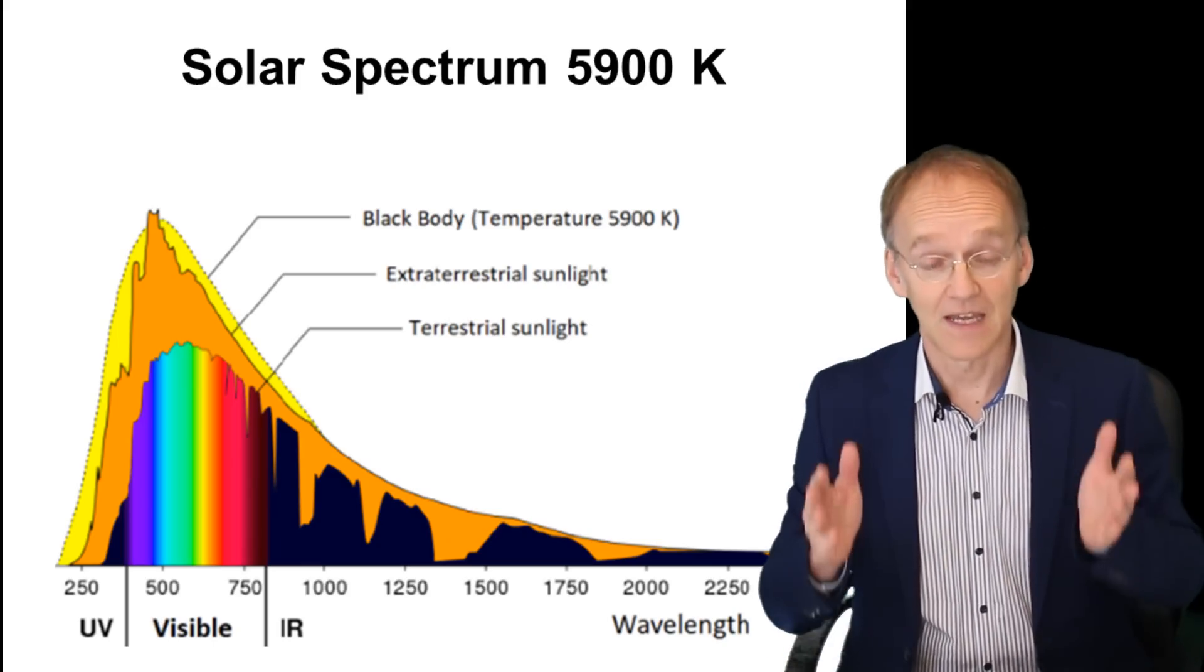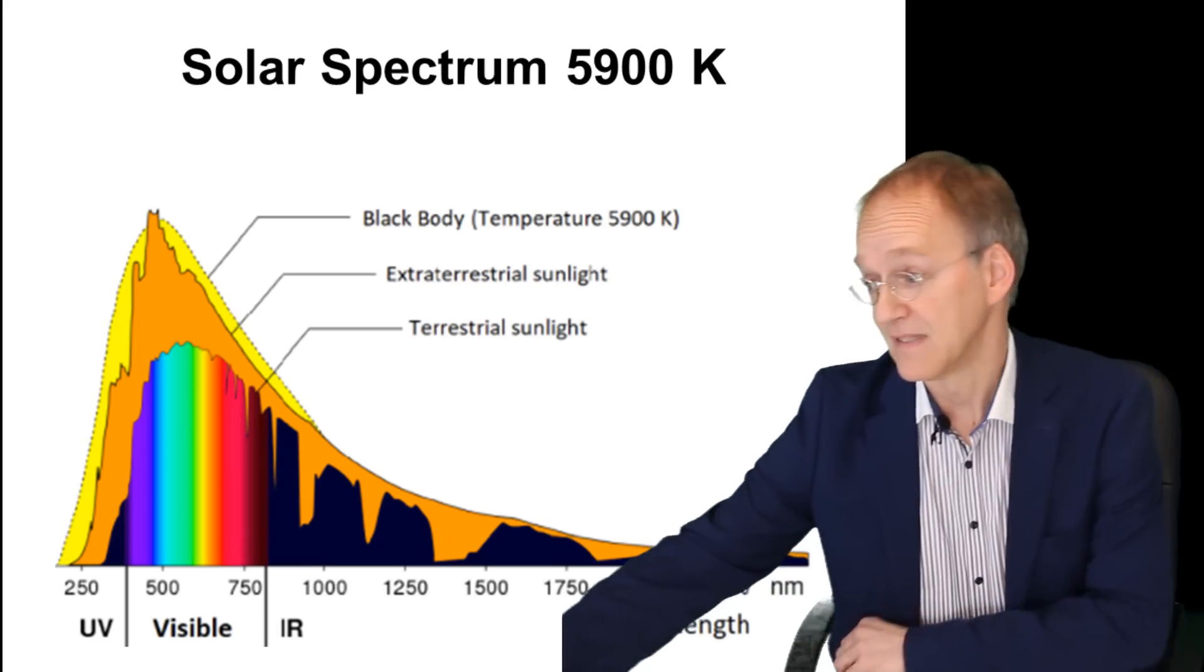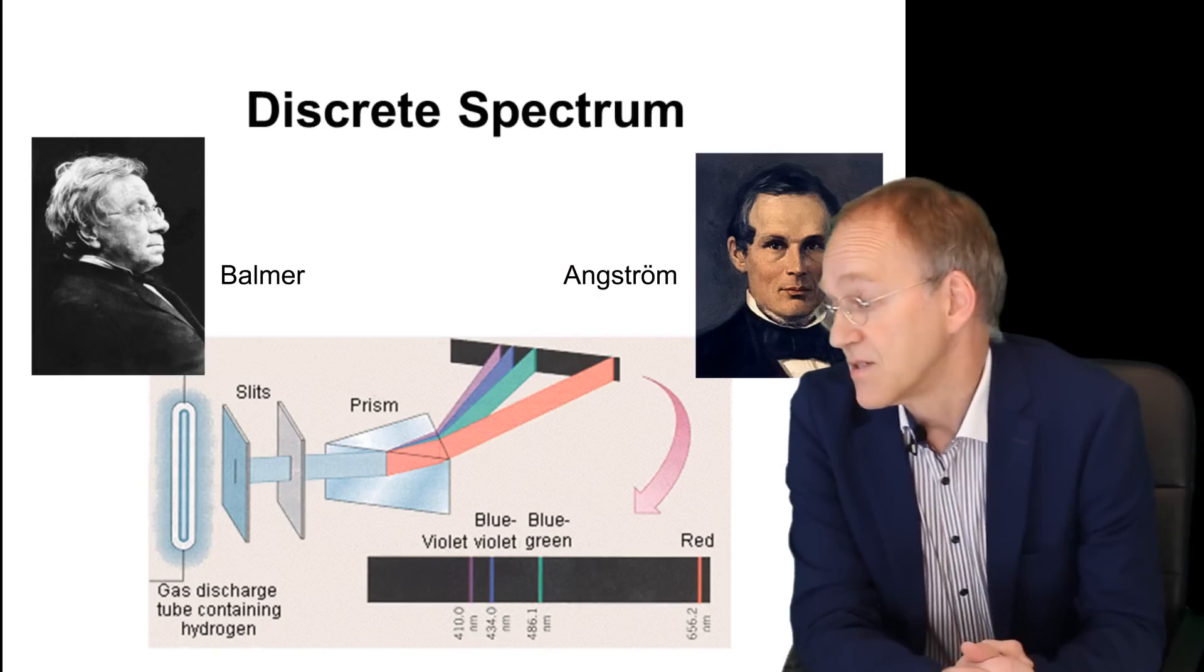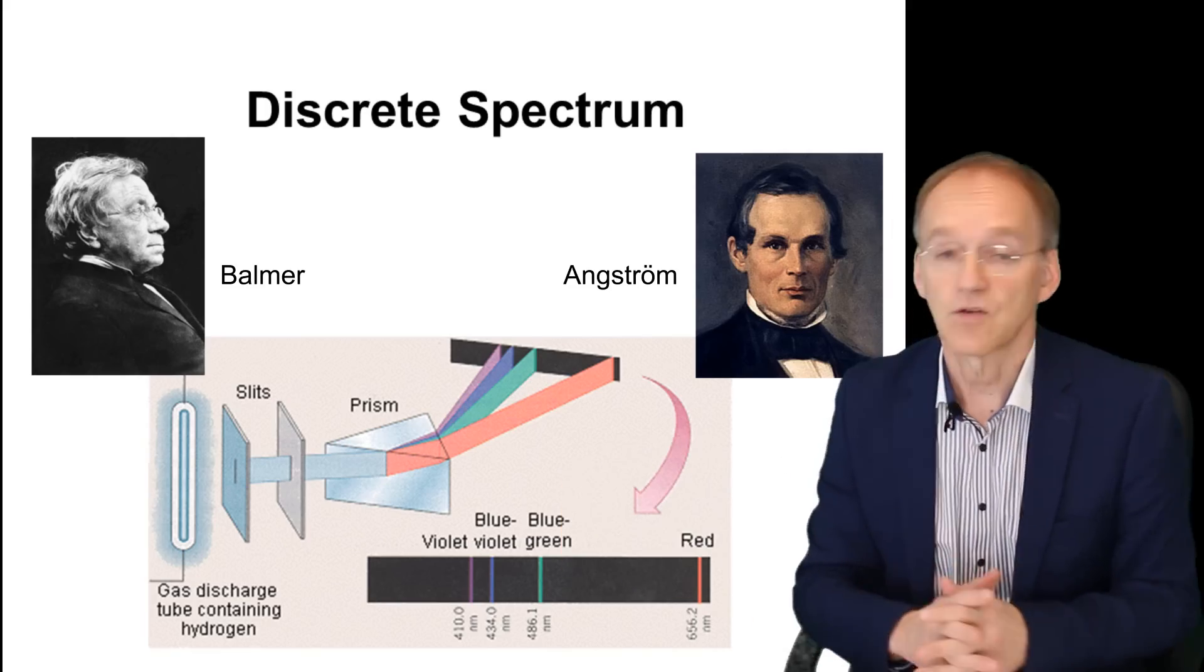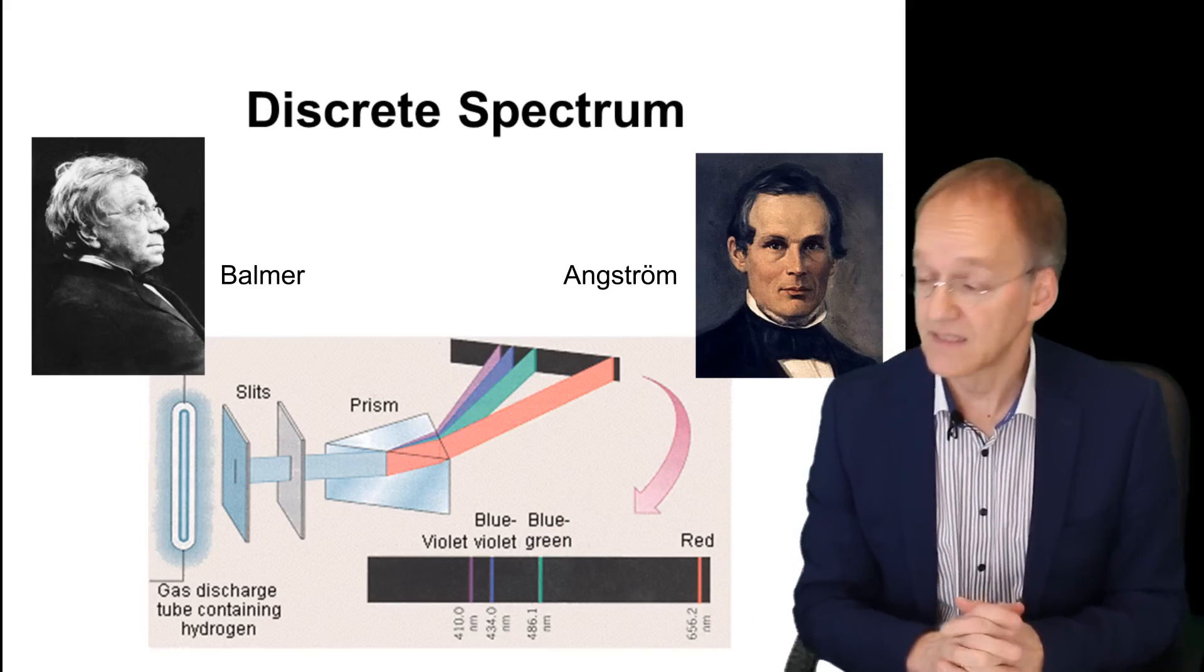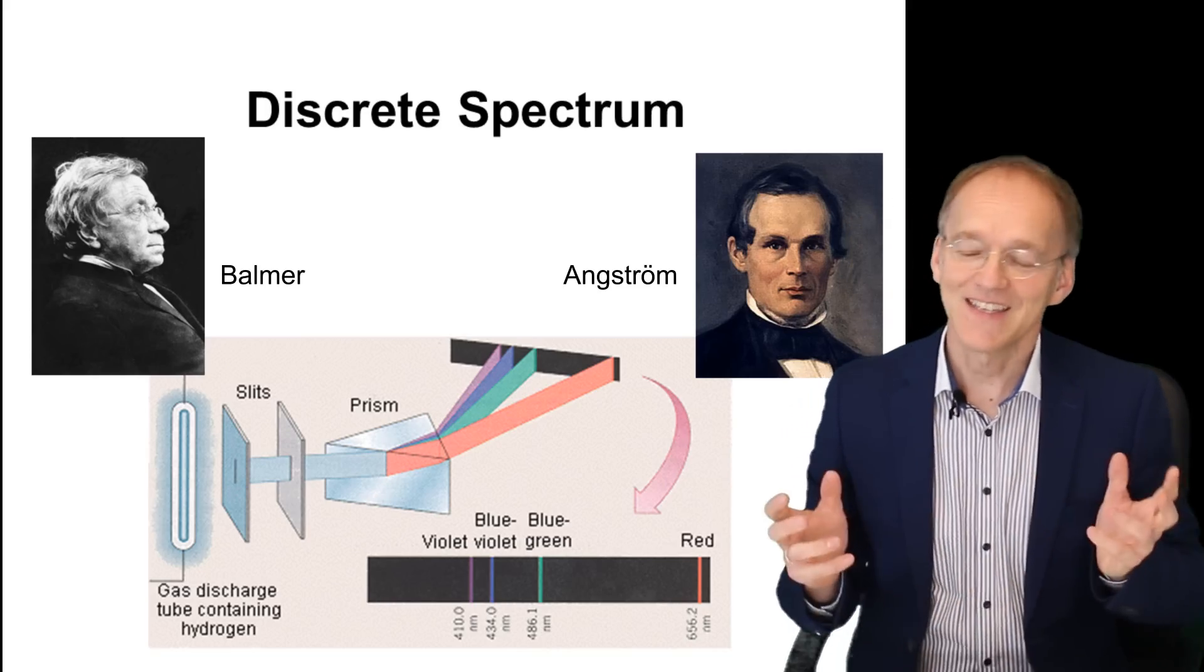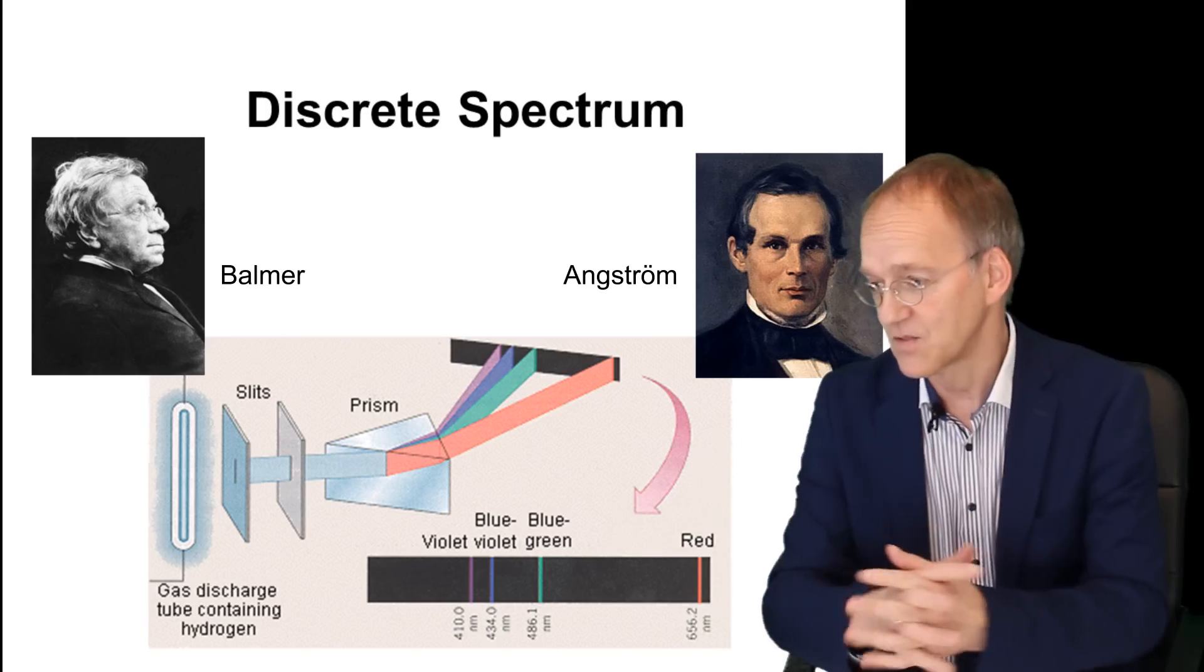I think it's a good idea if we understand in the first place how atoms do emit light. The guys to mention here are Anders Angstrom, who very precisely measured the lines you see here on the hydrogen atoms in a discharge tube, and Johann Jakob Balmer in 1885, who ingeniously developed a mathematical formula that described these spectral lines.